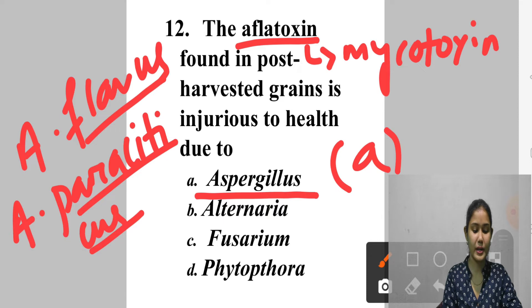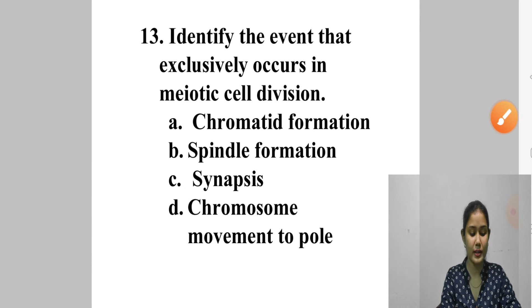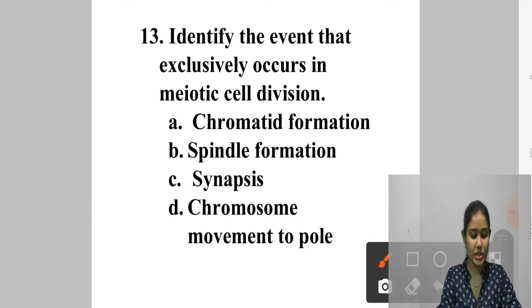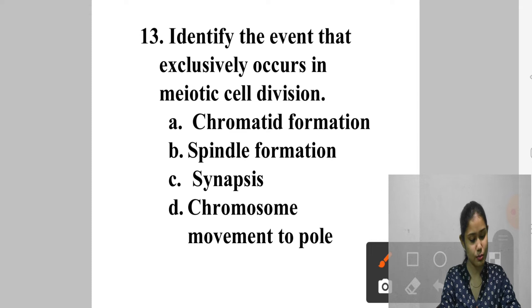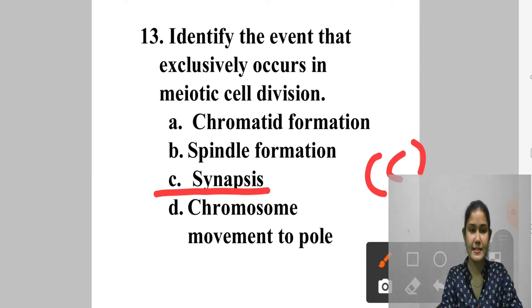Question 13: Identify the event that exclusively occurs in meiotic cell division. A. Chromatid formation, B. Spindle formation, C. Synapsis, D. Chromosome. Chromatid formation and spindle formation both occur in mitosis and meiosis. Synapsis is a characteristic of meiosis only. Answer is option C — synapsis.